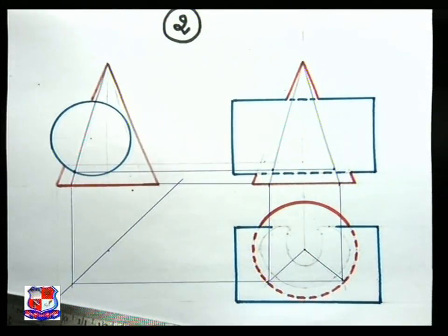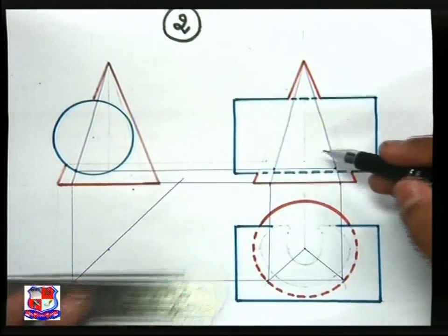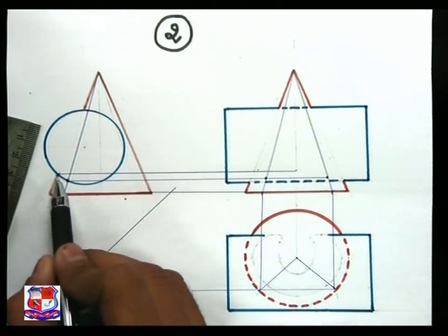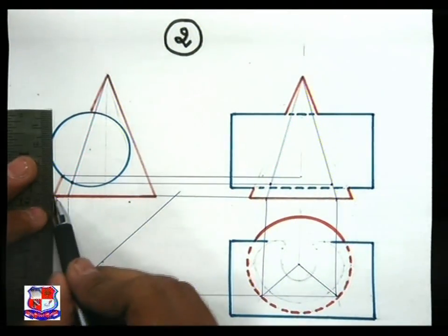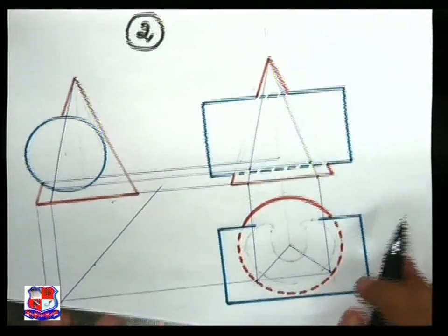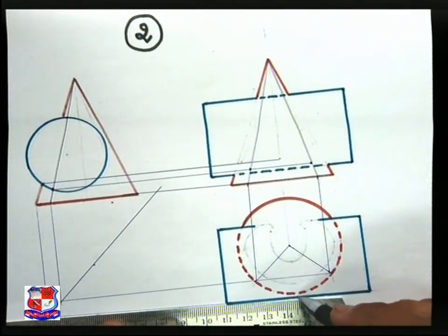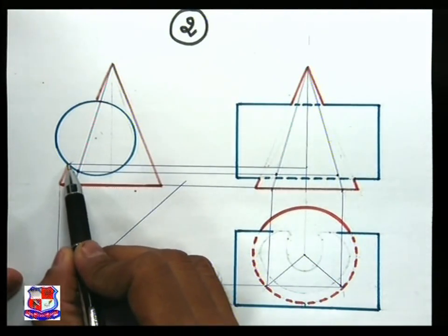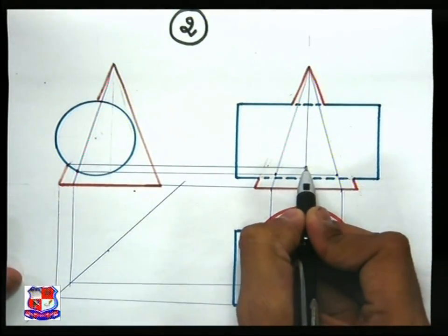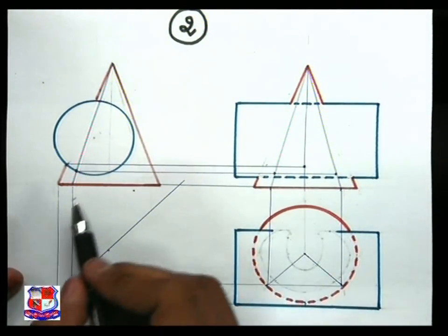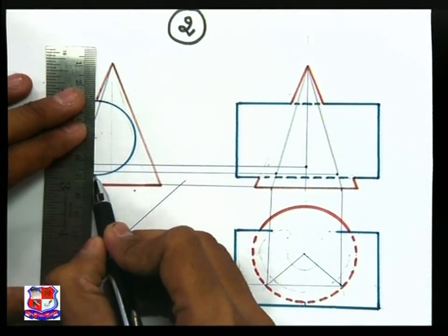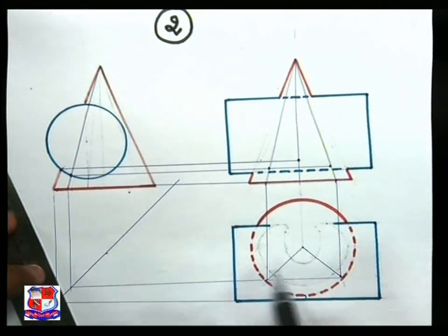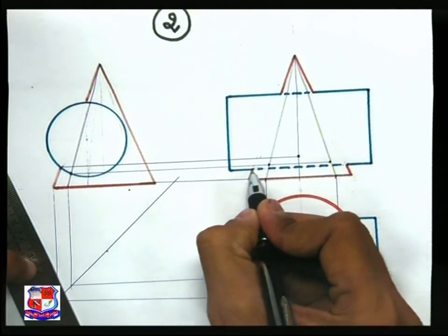Similarly for this point, transfer that point to the side view and front view. This point is on this generator, so find the front view of that generator by transferring this point to the side view and then from the side view to the top view. So from this point draw a straight horizontal line that will cut that generator over here - so one, two, and three points are located. Similarly another point is here - transfer that point from here to the top view generator and draw a horizontal line, so that point would be somewhere here.